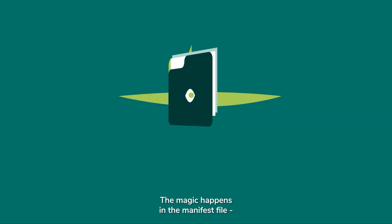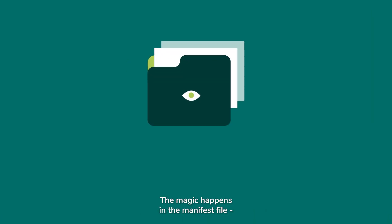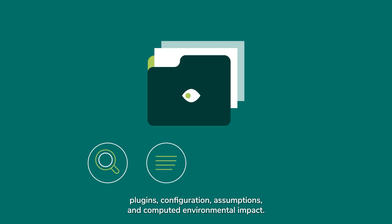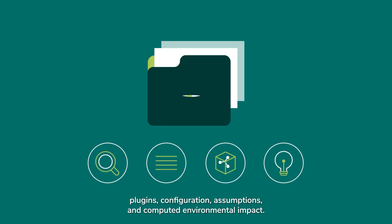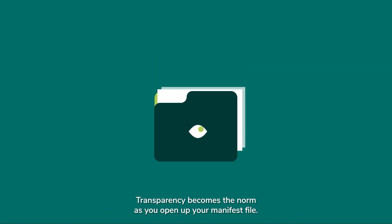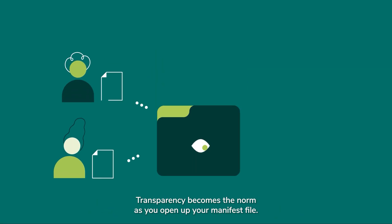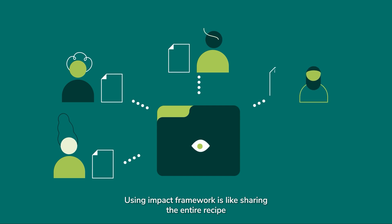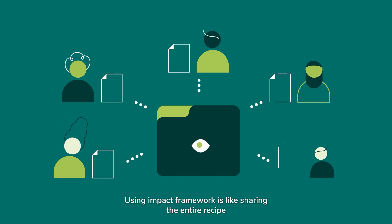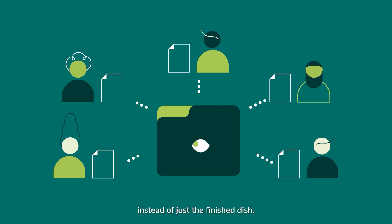The magic happens in the manifest file — a comprehensive record housing your observations, plugins, configuration, assumptions, and computed environmental impacts. Transparency becomes the norm as you open up your manifest file. Using Impact Framework is like sharing the entire recipe instead of just the finished dish.